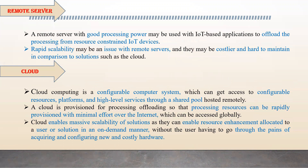Remote server offloading uses a server with good processing power, which can be used by any kind of IoT application to offload processing from resource-constrained IoT devices. However, the remote server has rapid scalability as an issue — it can be costlier and it is very hard to maintain, especially when handling large volumes of data in a cloud server.